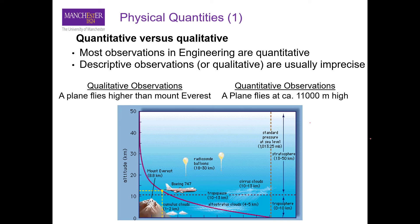In engineering, most observations are quantitative because we are always designing something and we need to have precise dimensions of different units. All the quantities we need must be quantitative, because qualitative observations are usually imprecise and can lead to significant errors in designing.